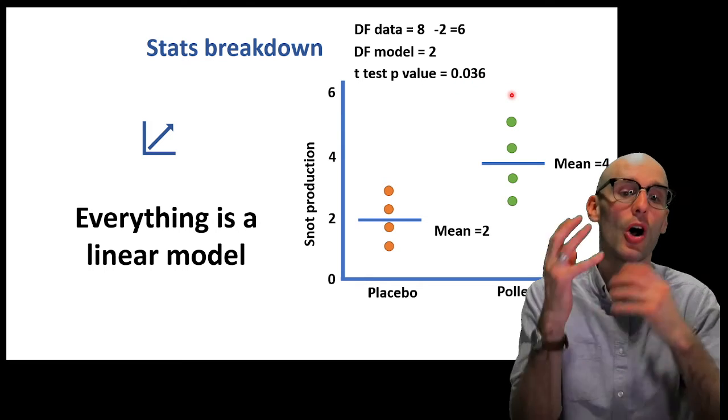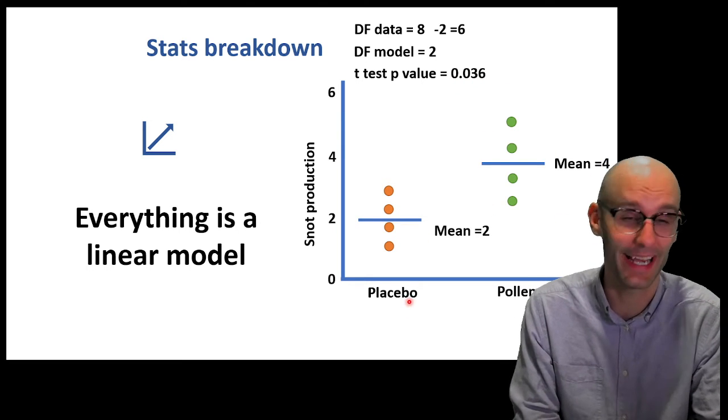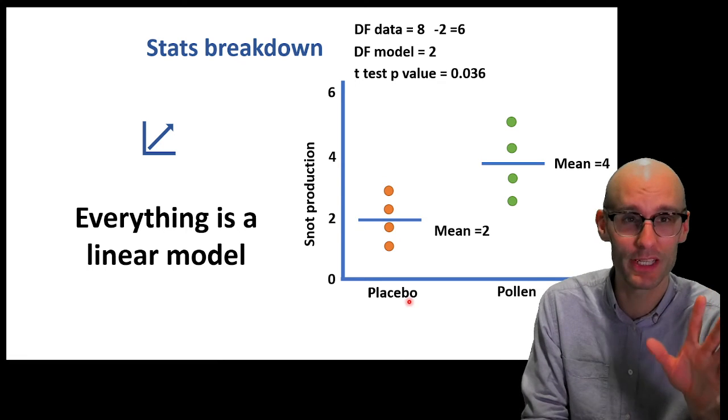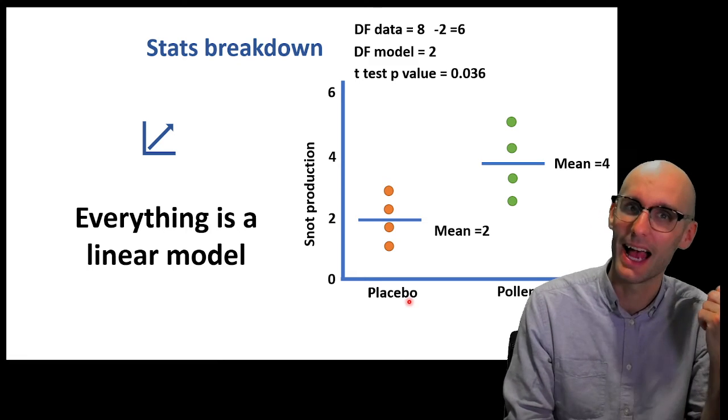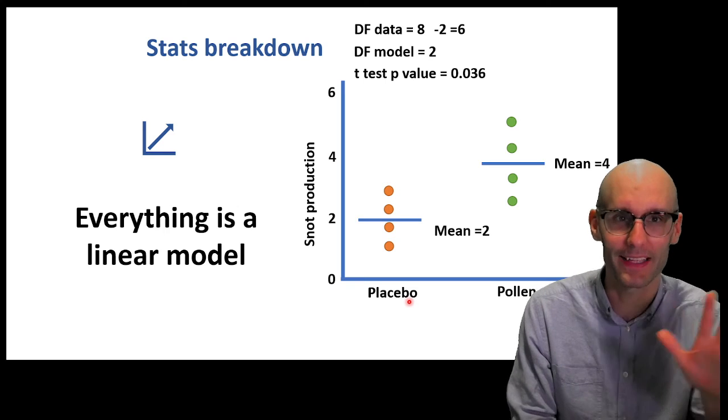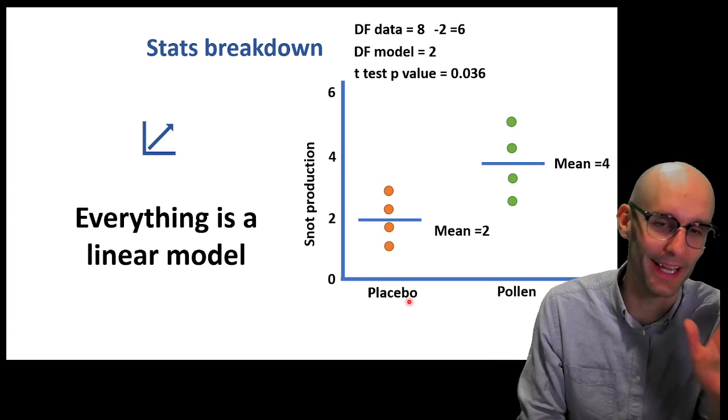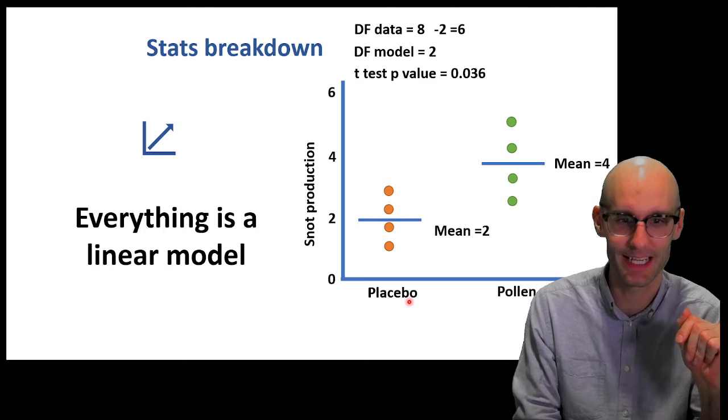So now that we've got 2 degrees of freedom in our model, we had to subtract that from our data and we end up with 6 degrees of freedom in our data. If you don't understand why that happened, make sure you go back and watch the previous video. Essentially, once you know the mean and you know these three data points, this data point must be that value in order to make the mean 4. It's not free to vary because you know something about the data. And if we run the t-test p-value, we get 0.036. So that's the p-value of the t-test of this data. That's done. That's what the average first year stats lecturer would tell you. You've got 2 groups. You run a t-test.